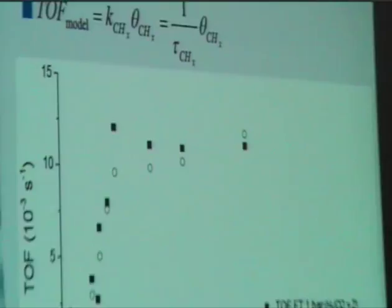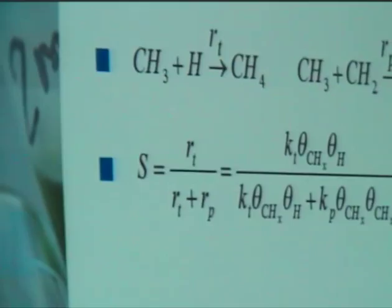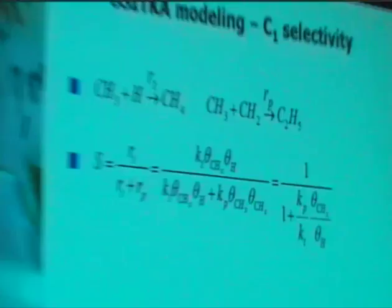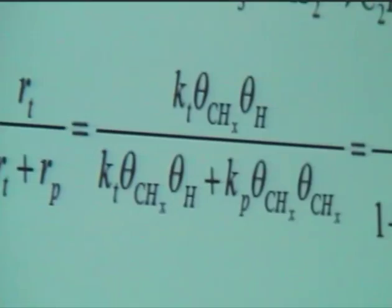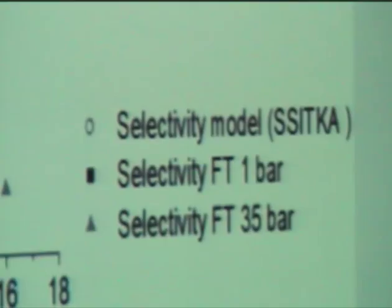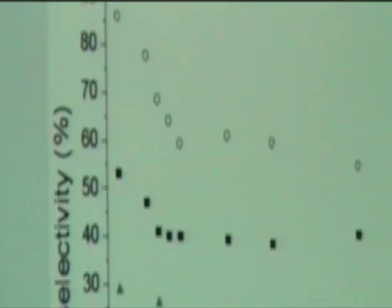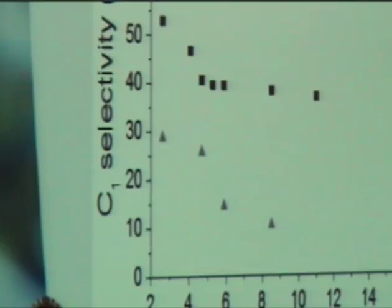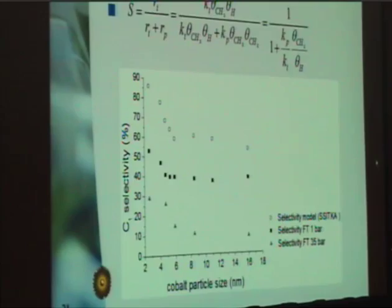For the methane selectivity, we assume two competing reactions: a termination step forming CH4, and a propagation step with carbon-carbon coupling. Describing the selectivity leads to a formula involving coverages of CHX and hydrogen, with one fitting parameter — the ratio of the propagation to termination constant. The model results (open spheres) show very nice agreement with the trend of increasing methane selectivity below 6 nanometers, both at 1 bar and at 35 bar. The differences in absolute values are due to higher pressure or the higher hydrogen-to-CO ratio used in SITKA.